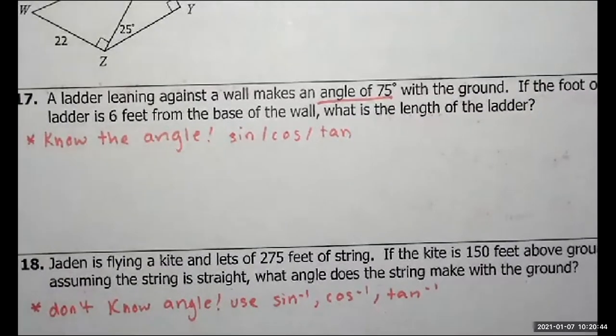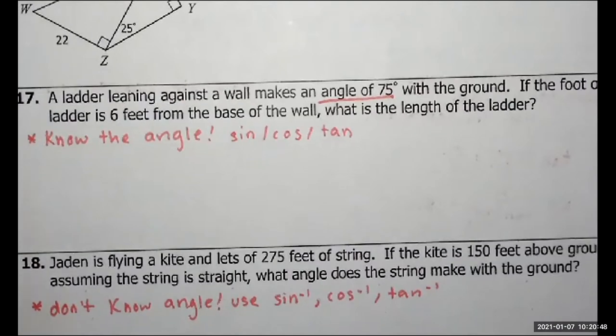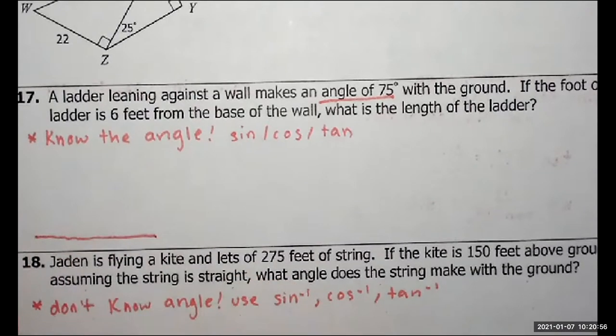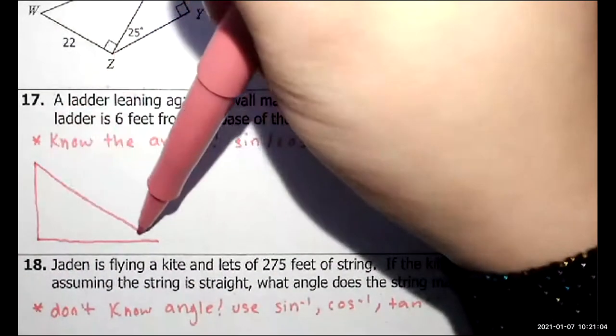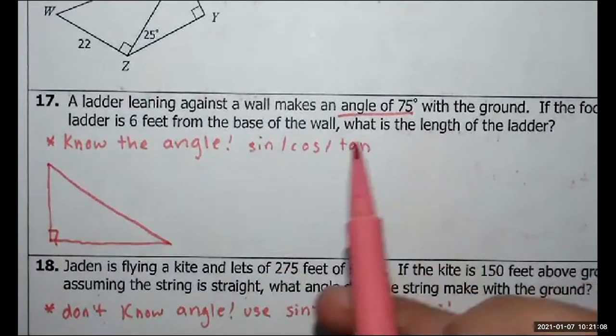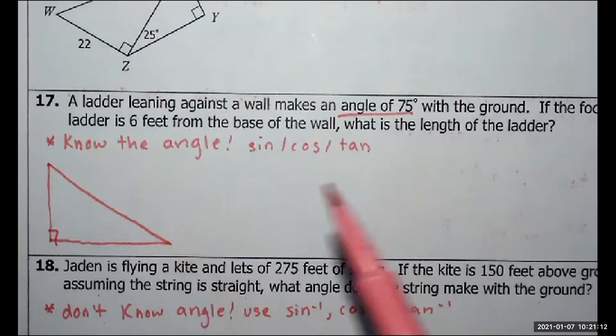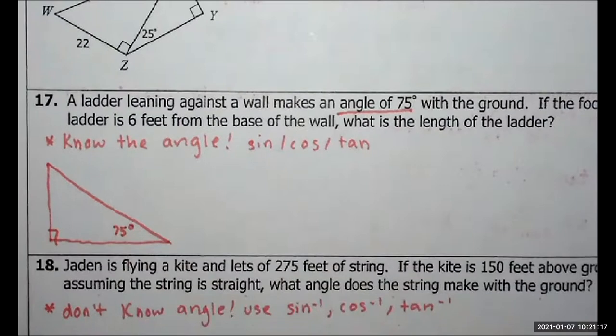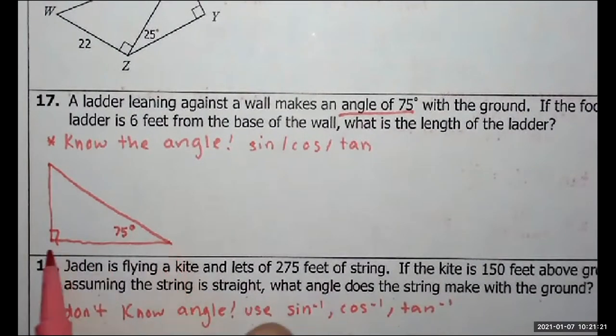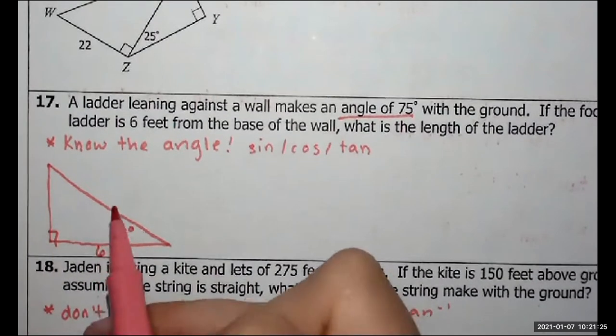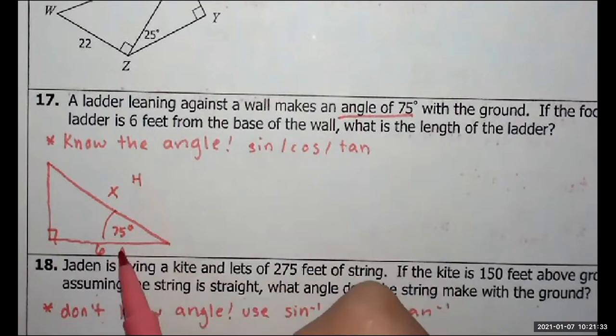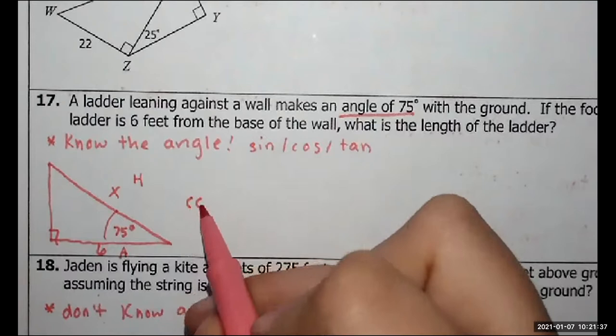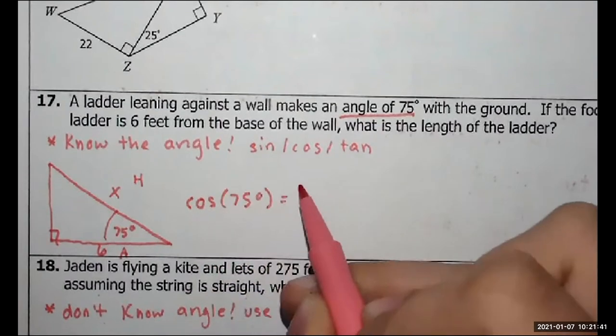So let's actually set these up real quick and then that'll be it for the video. So ladder leaning against a wall makes an angle of 75 degrees with the ground. If the foot of the ladder is six feet from the base of the wall, what is the length of the ladder? So we always have our ground and problems like this and we have a wall. The ladder is leaning one end on the ground, one on the wall. We've got our triangle. So it says the ladder leaning against the wall makes an angle of 75 degrees with the ground. So that angle will be right here. If the foot of the ladder is six feet away from the base of the wall, so six goes here, how long is the ladder? If I look and see my angle here, I know the hypotenuse and the adjacent side. A H, cosine problem. Cosine of 75 degrees is A over H.